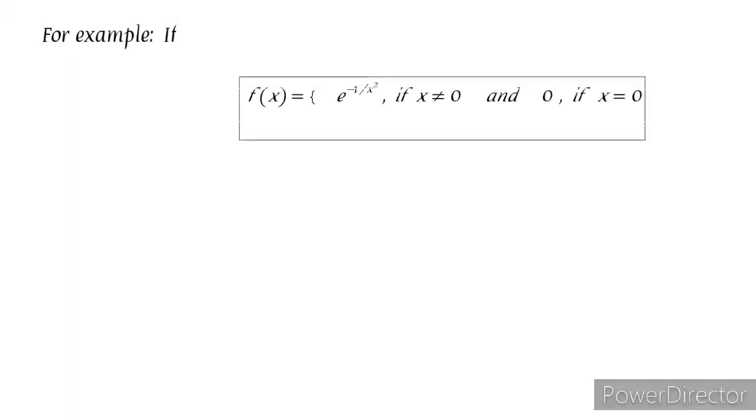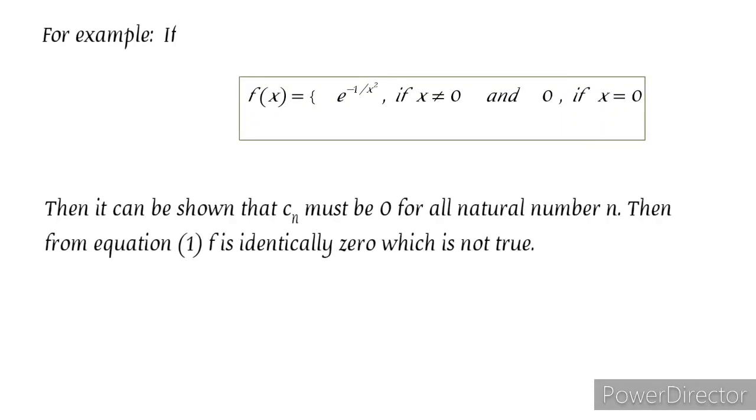For example, if F of X is given as e to the power minus 1 by X square if X is not 0, and 0 if X is 0, then it can be shown that CN must be 0 for all natural number N. Then from equation 1 from the previous slide, F is identically 0, which is not true.